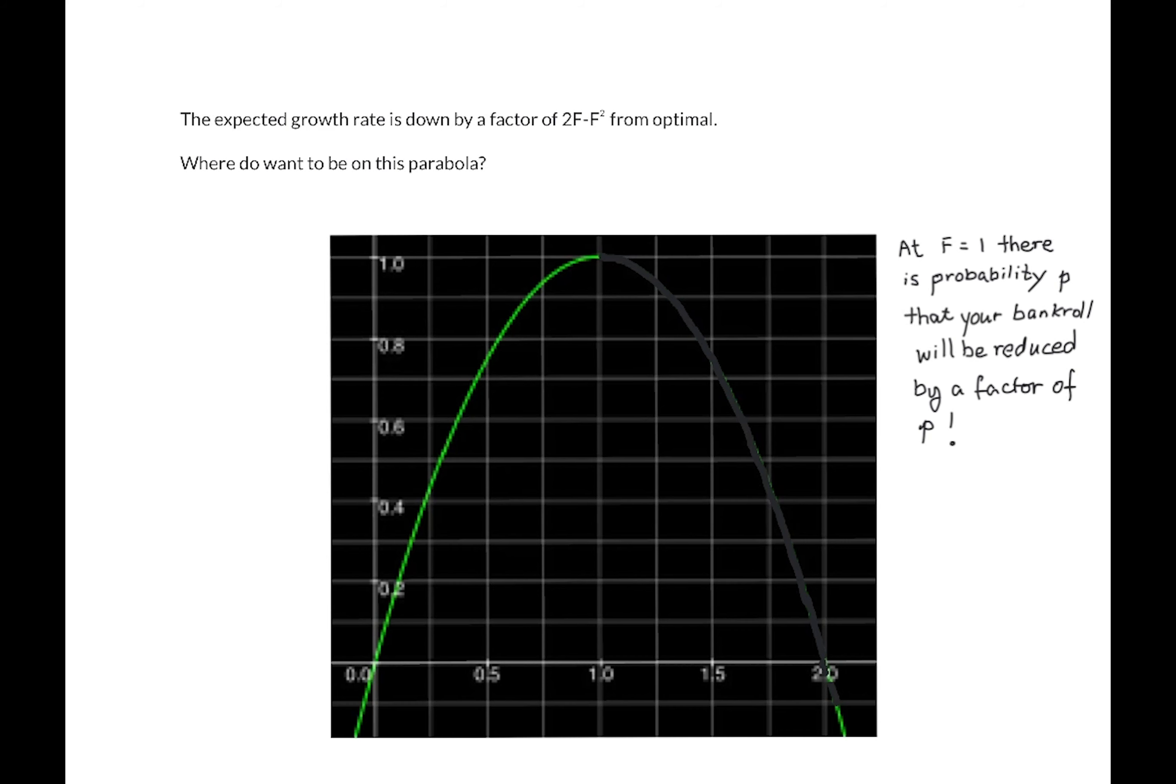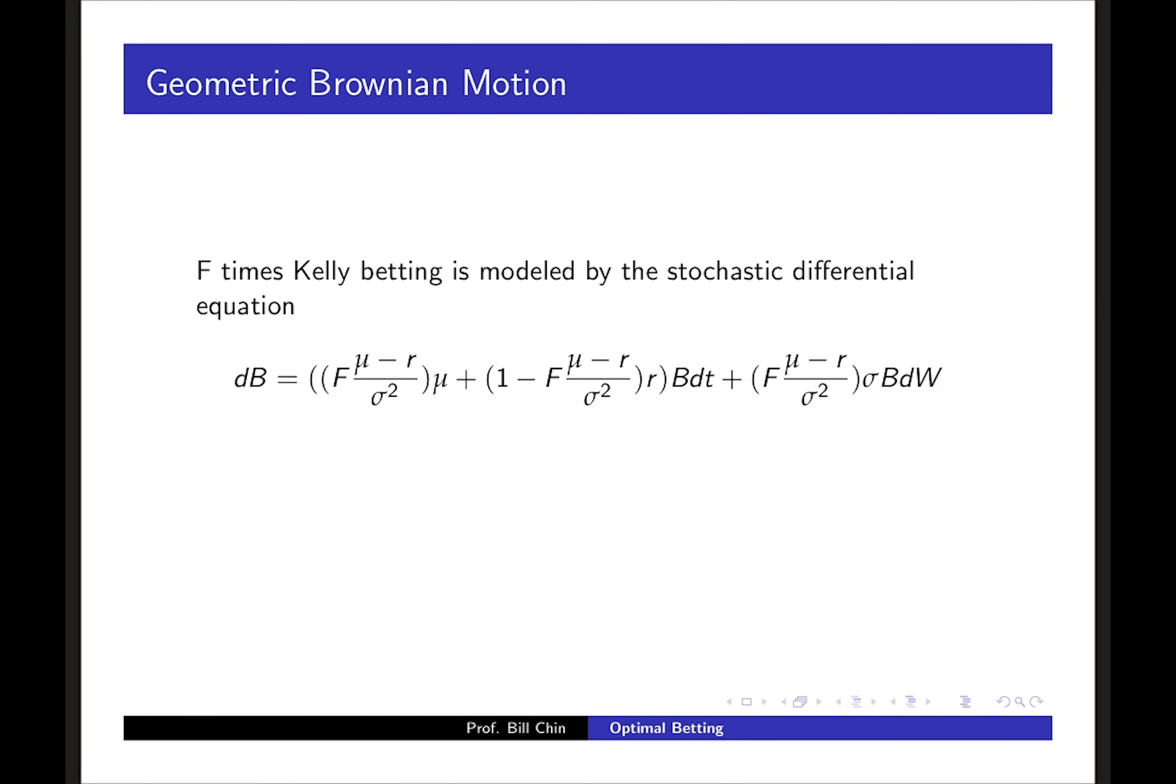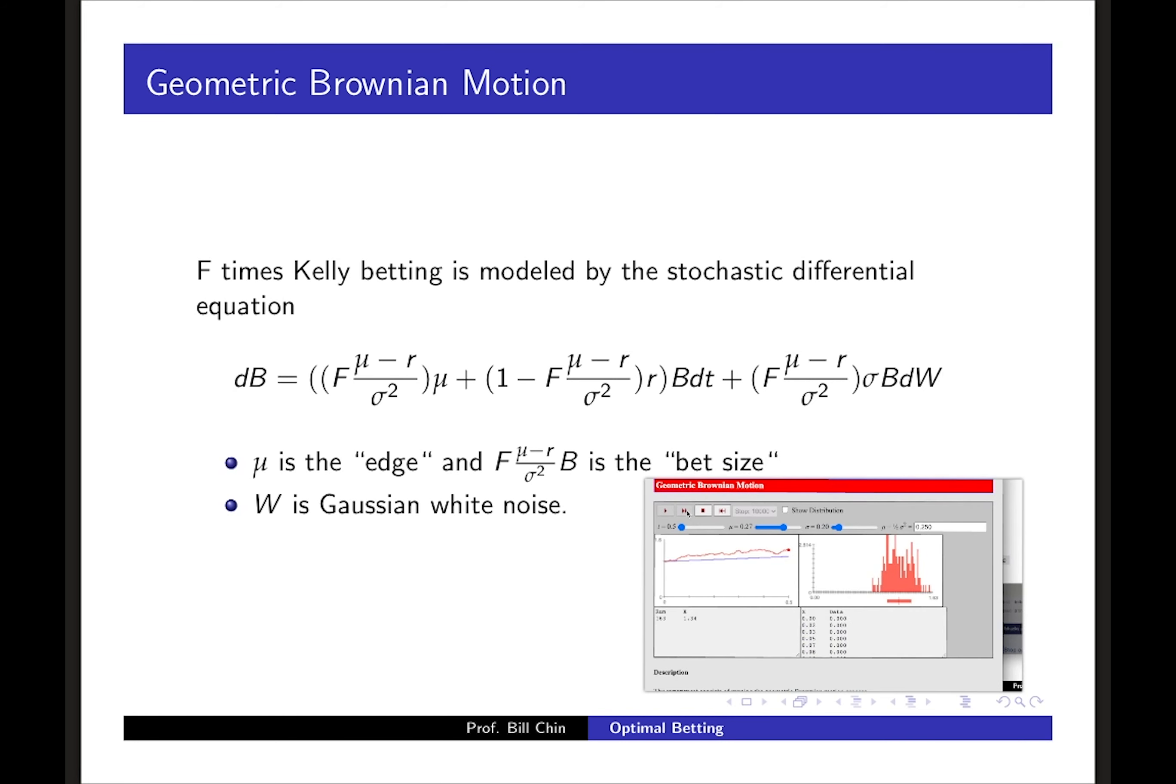The proof of this formula comes from the theory of stochastic calculus. To make things more broadly applicable we use the stochastic differential equation as shown which results in geometric Brownian motion. μ is the edge in the game and the other term is the so-called bet size, and dW is Gaussian white noise. Geometric Brownian motion is exponential growth with a normal noise term superimposed in a specific way.